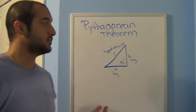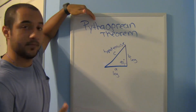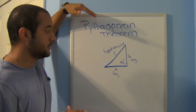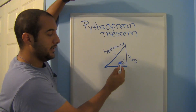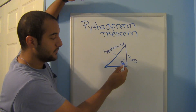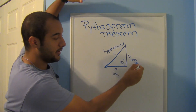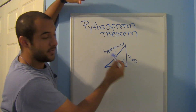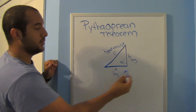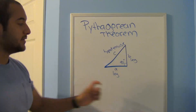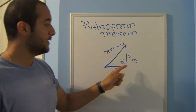First, let's look at the parts of a right triangle. The Pythagorean theorem is only going to work for right triangles. A right triangle obviously has 90 degrees. You have a leg, a leg, and the side that is opposite the 90 degrees — that's your hypotenuse. It actually doesn't matter if you put a on this side and b on the other side.